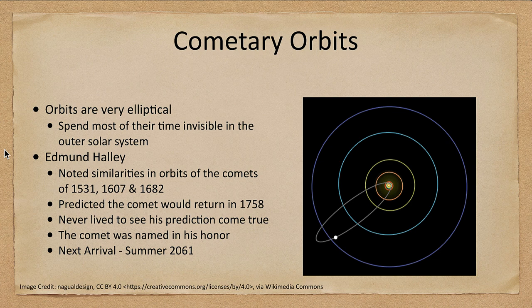A comet like Halley's Comet has an orbit of about 76 years. It would spend the vast majority of its time out in the depths of the solar system, and would only spend a very short time close to the sun where it would be visible.